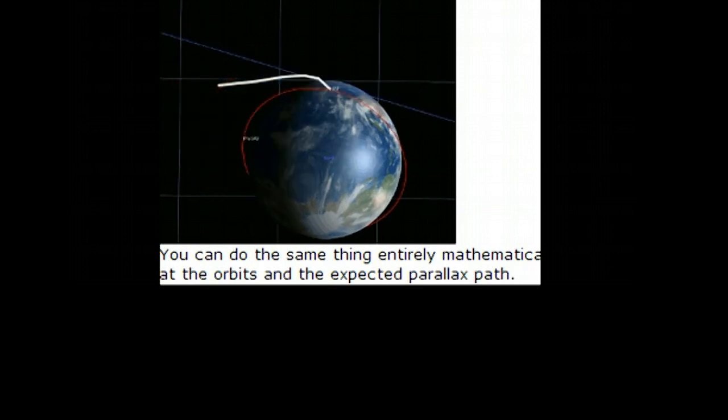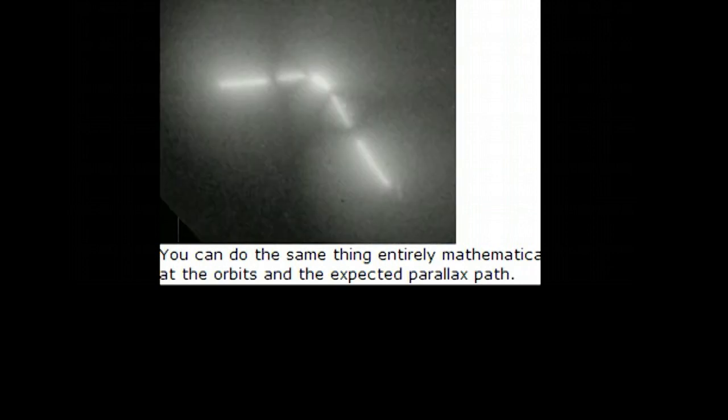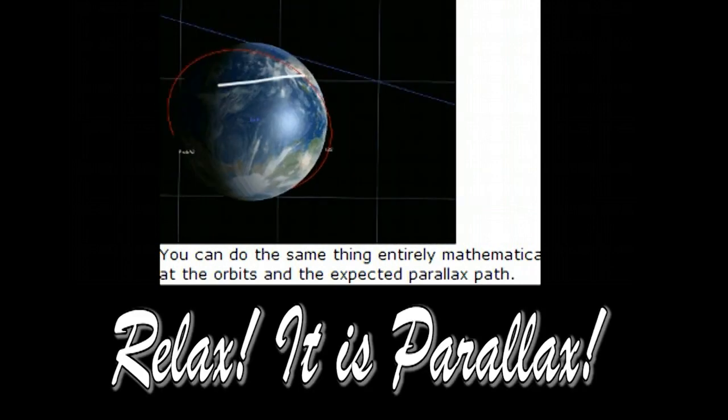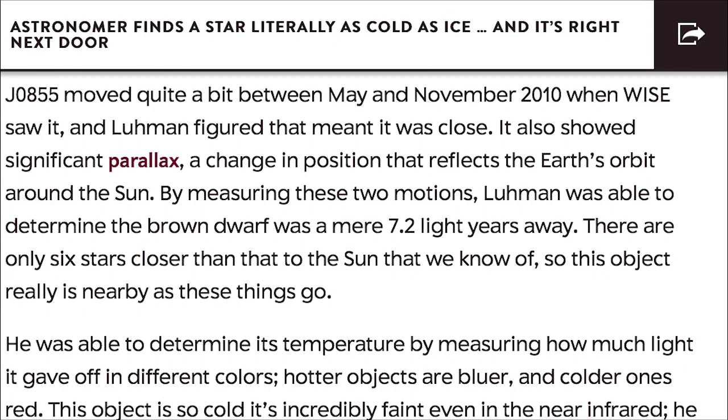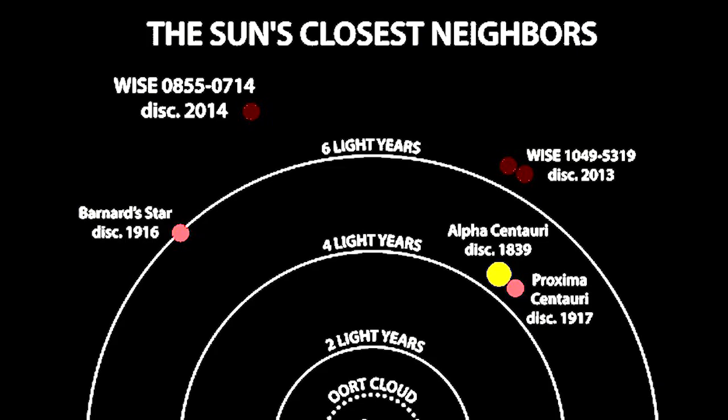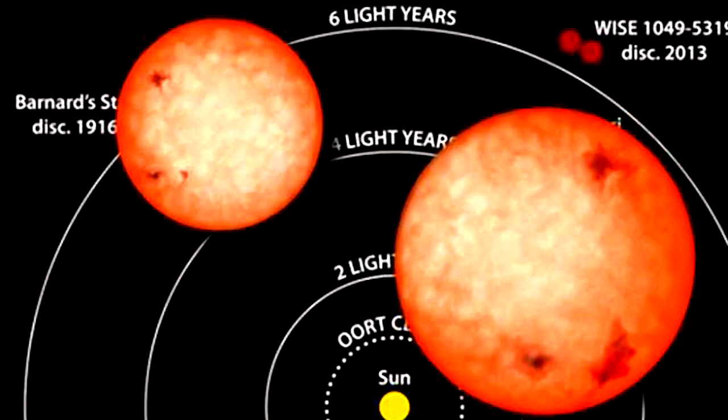Like when comet ISON went around the sun and shot out, looked like a giant V spaceship—that was parallax, dude. See, if you were standing on the sun looking straight up at ISON it would look like a juice box. But nope, because we're on the Earth moving and the sun was moving and ISON was moving, it looked like a giant V spaceship.